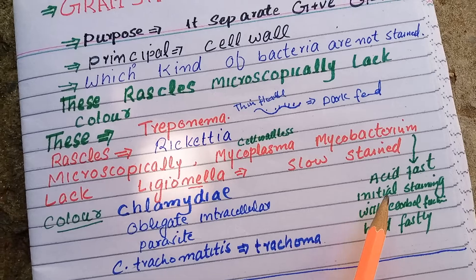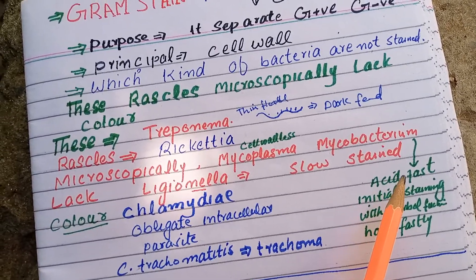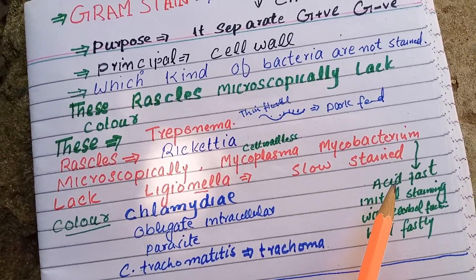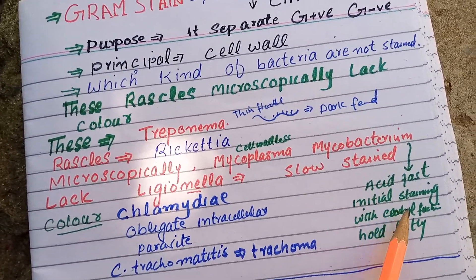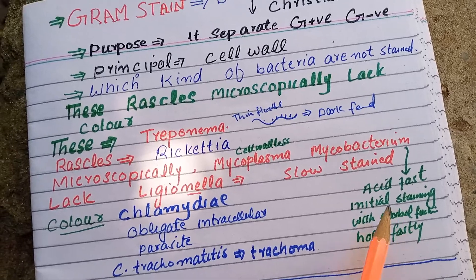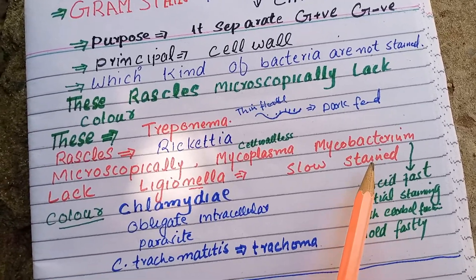Mycoplasma are not stained. Why? Because they are cell-wall-less bacteria, and Gram staining is based on the cell wall.